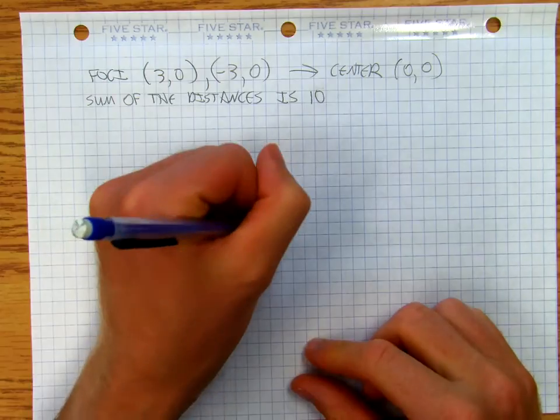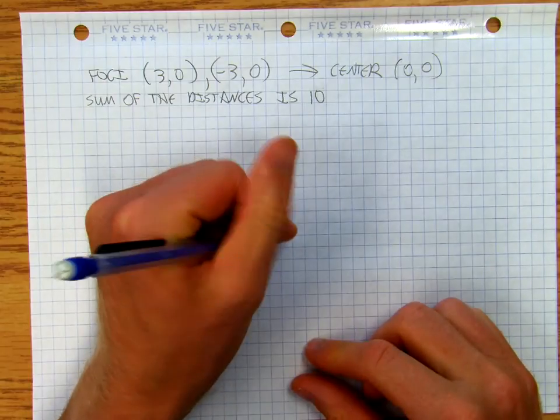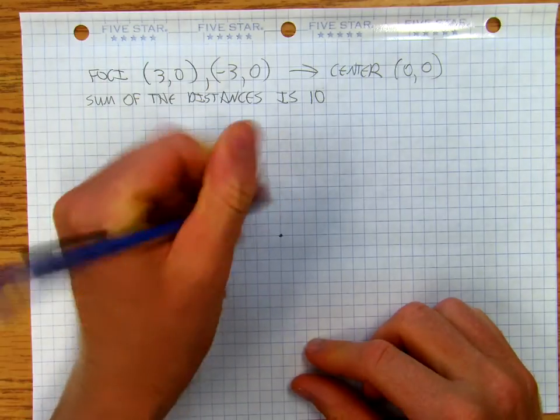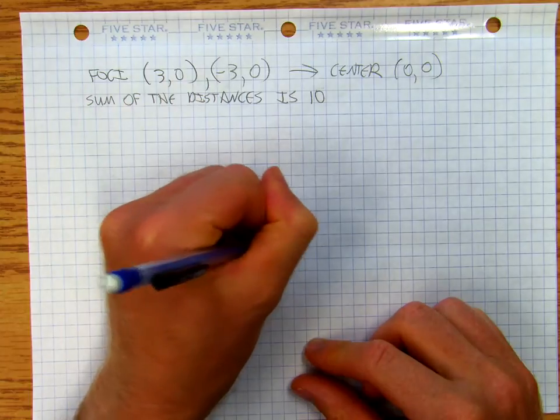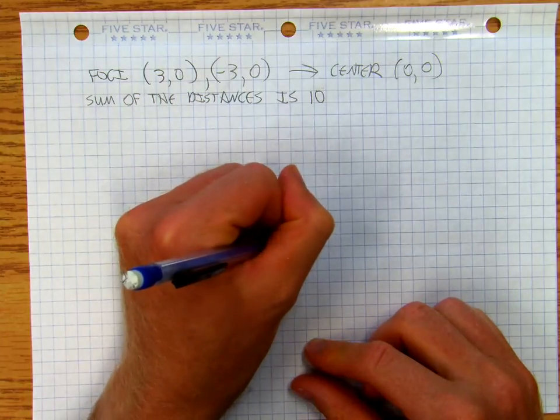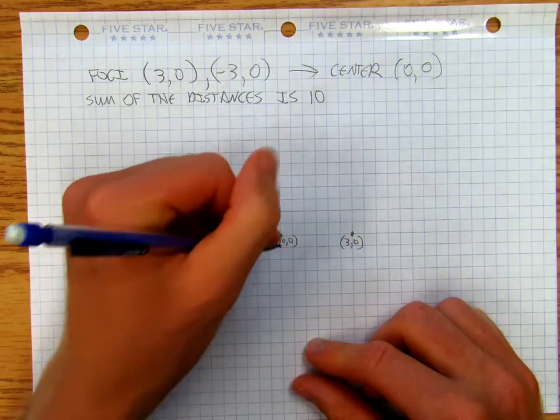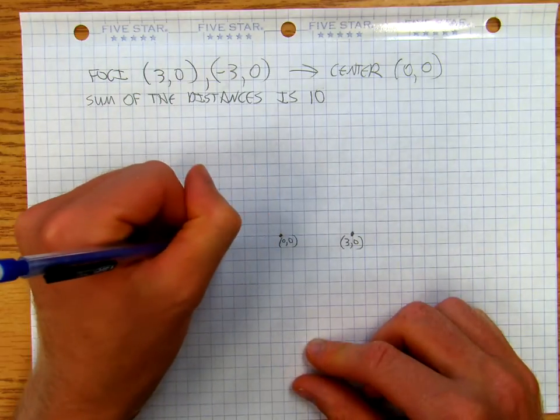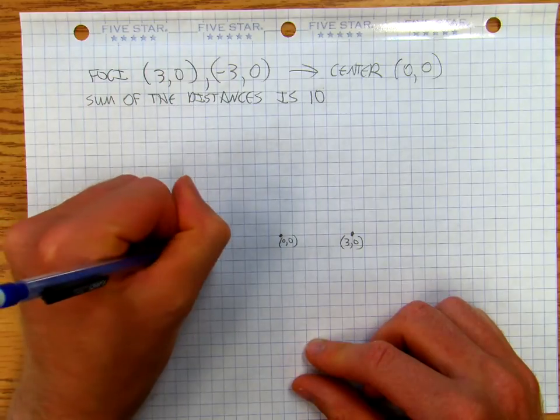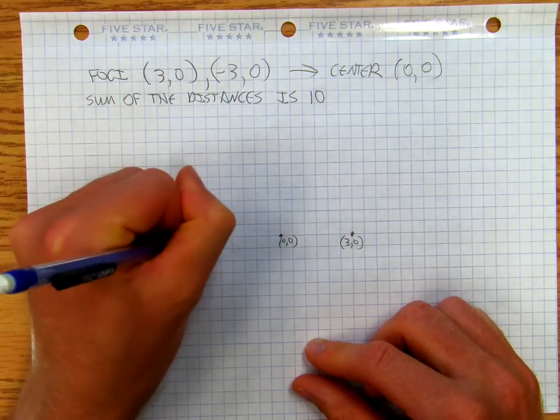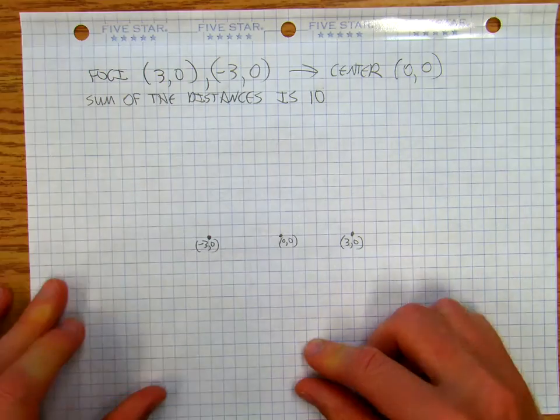Okay, so I've got a foci here, so here's 0, 0. And I go 1, 2, 3. So there's 3, 0. And I go 1, 2, 3. So there's negative 3, 0. So there's my two foci.